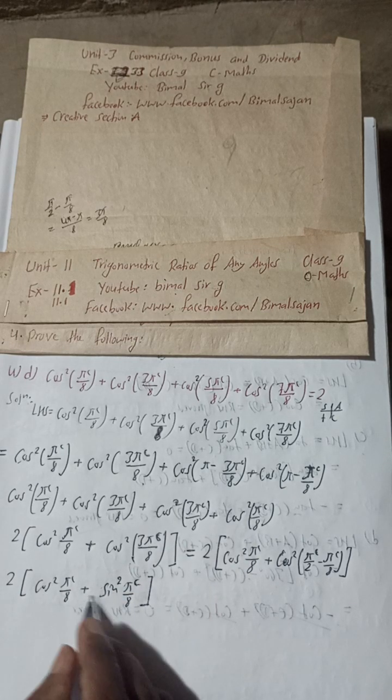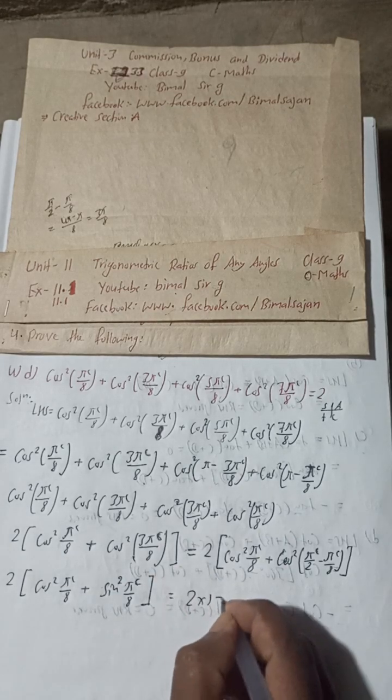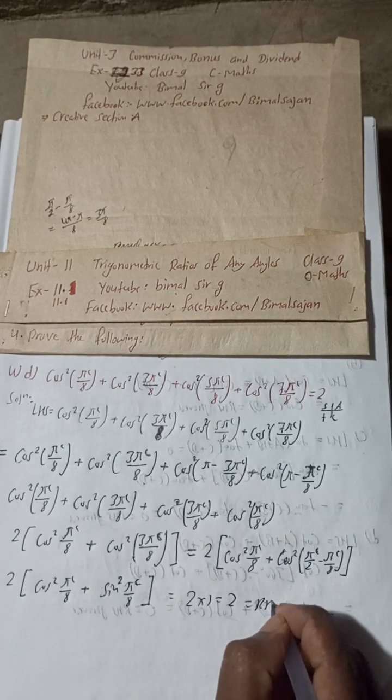This is cos²θ + sin²θ, so the value is 1. Therefore 2 × 1 = 2 = RHS. Proved.